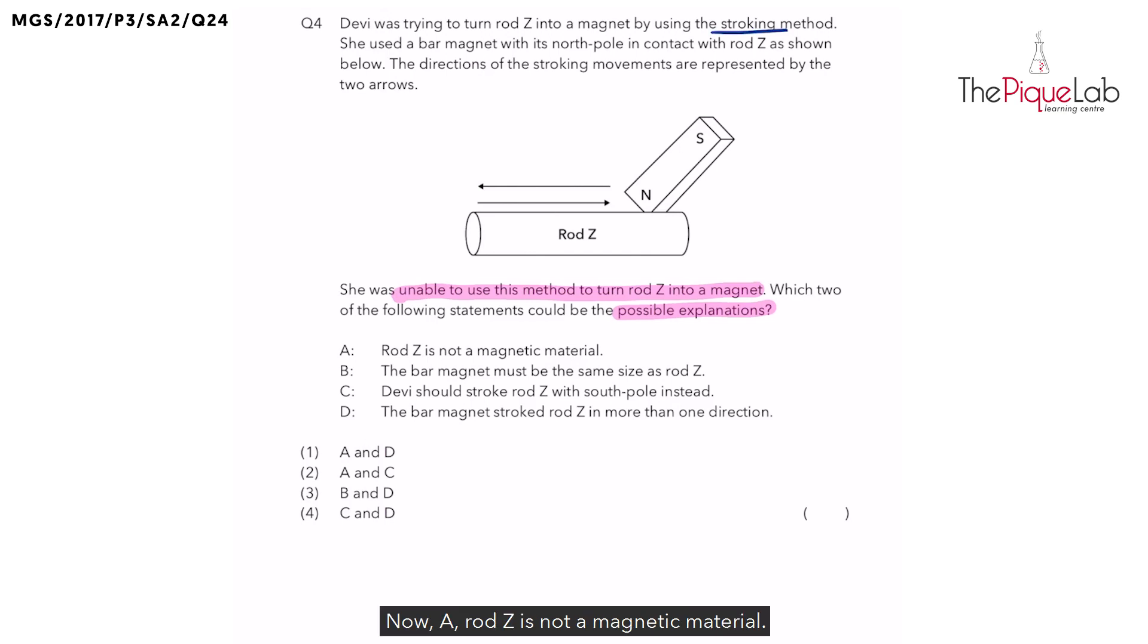Option A: Rod Z is not a magnetic material. Now, in order for rod Z to become a magnet, can rod Z be made of a non-magnetic material? No. Rod Z has to be a magnetic material. So let's write down, rod Z must be a magnetic material. And what are the magnetic materials? Steel, iron, nickel, cobalt. Hence, could this statement be a possible reason why we couldn't turn rod Z into a magnet? Yes. Maybe rod Z was not a magnetic material. So this is a possible explanation.